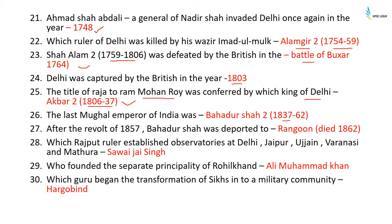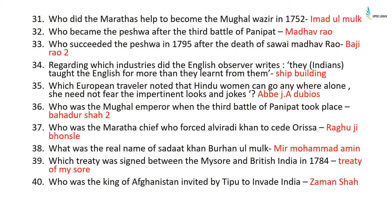The last Mughal Emperor of India was Bahadur Shah II, who ruled from 1837 to 1862 and was exiled in 1857 after the mutiny, sent to Rangoon where he died. The Rajput ruler who established observatories at Delhi, Jaipur, Ujjain, Varanasi, and Mathura was Sawai Jai Singh. The founder of the separate principality of Rohilkhand was Ali Muhammad Khan. The Guru who began the transformation of Sikhs into a military community was Guru Har Govind.